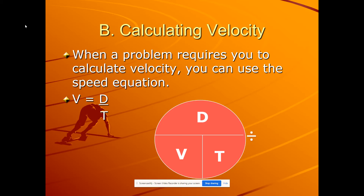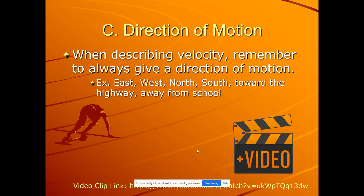Using the pie chart, the horizontal line represents the division line — anything crossing it we divide. The vertical line represents the multiplication line — anything crossing it we multiply. So we plug in the formula: velocity equals displacement divided by time, or distance divided by time, whatever we're given in the problem, and we're ready to solve.